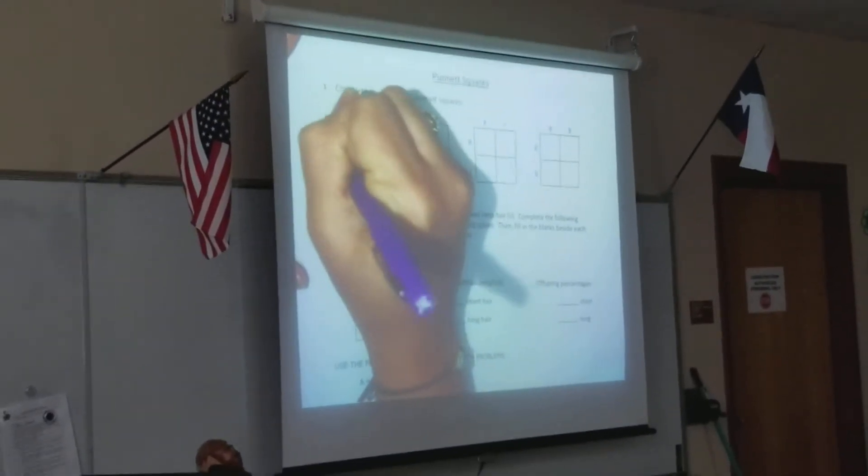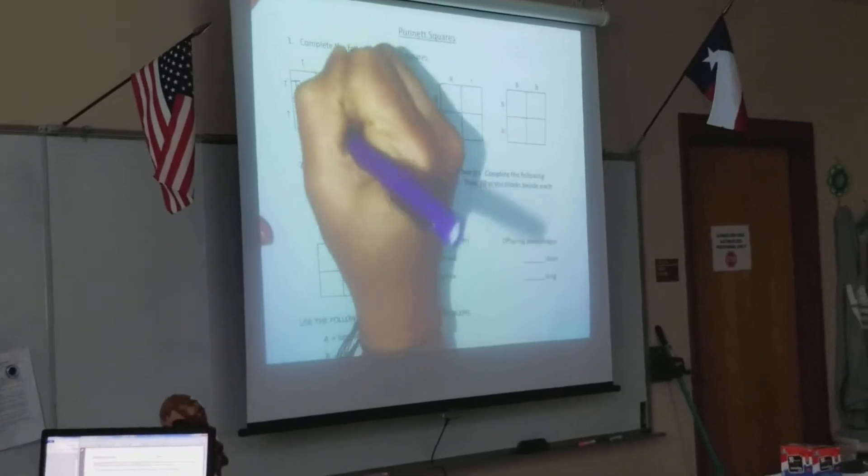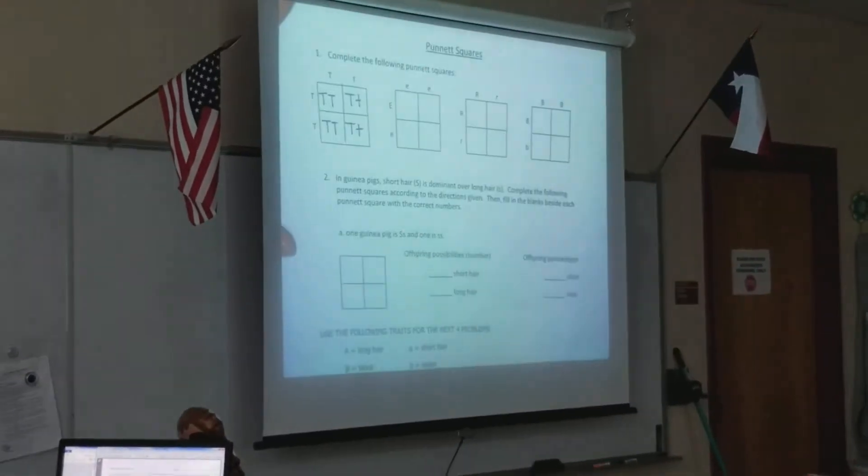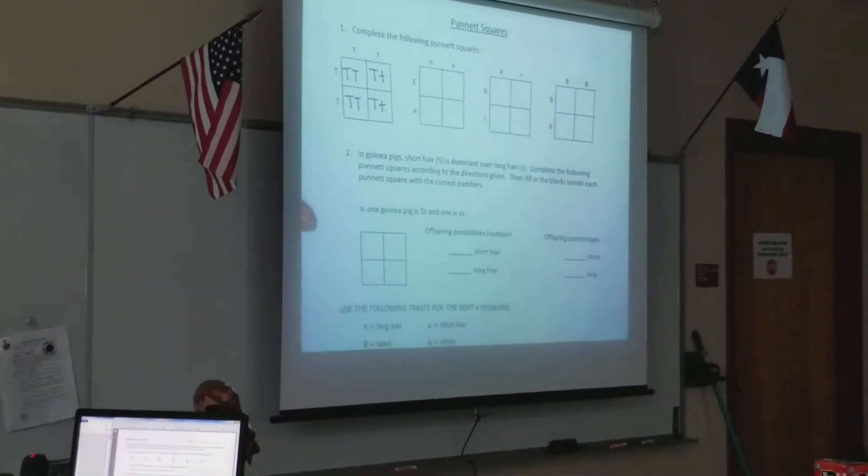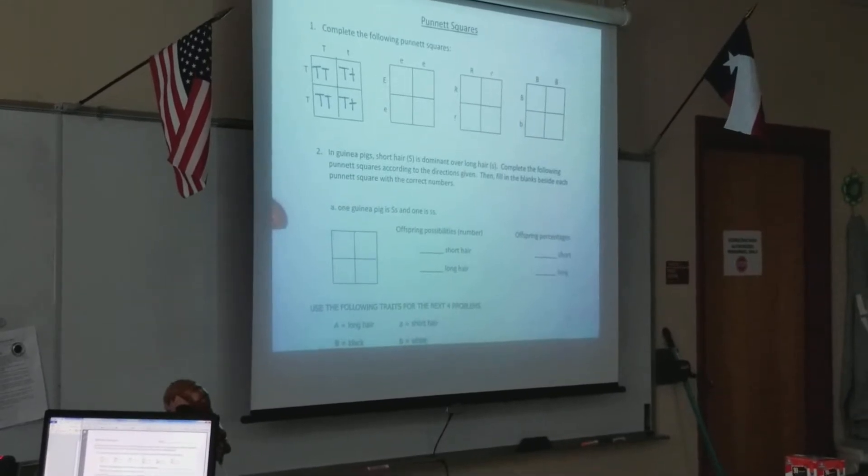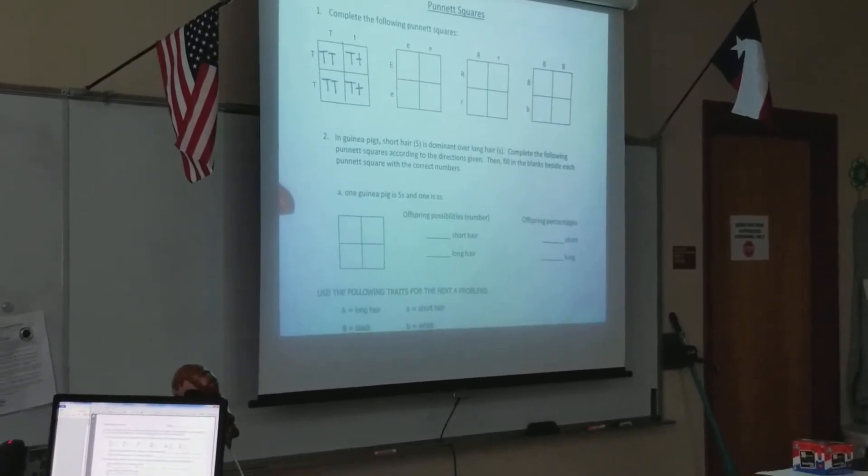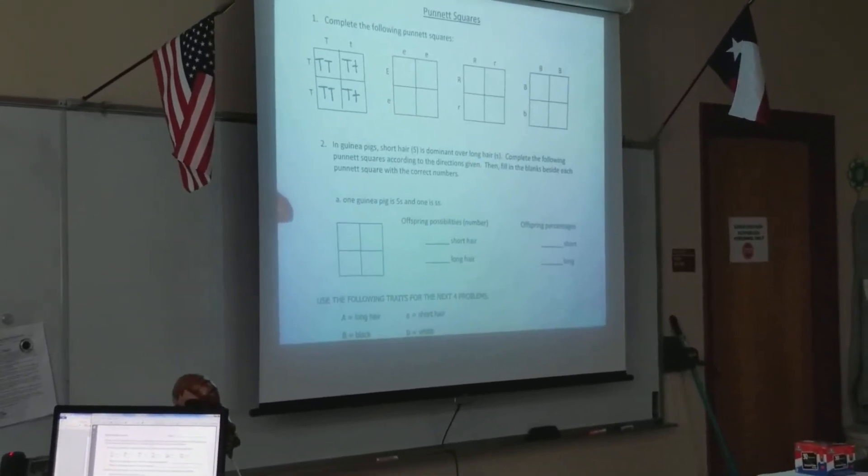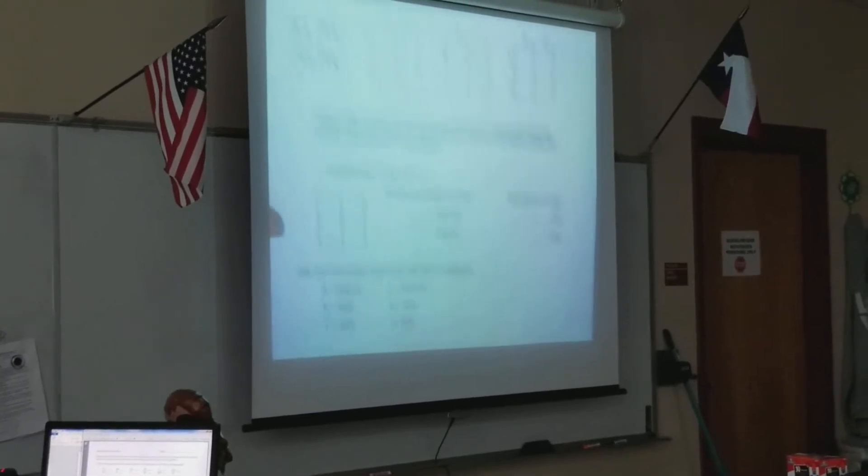So you go in and you drop the alleles into the square. And you always list the dominant allele first because the law of dominance states that as long as you have one dominant allele, one capital letter, that's going to be physically expressed. So those are pretty self-explanatory.